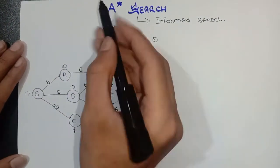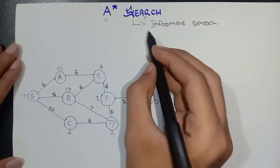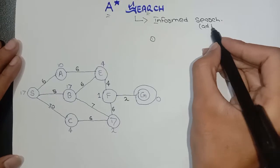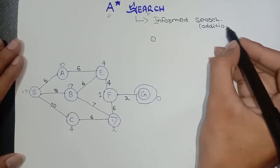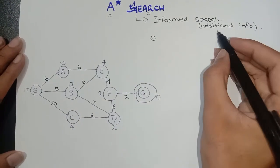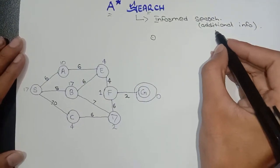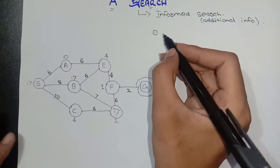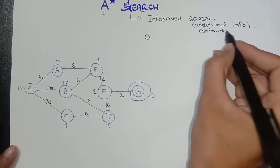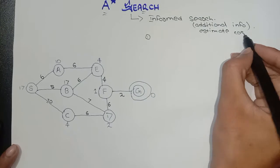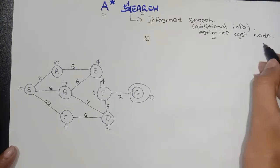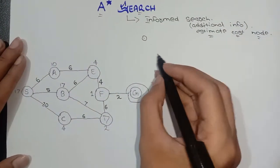Hey guys, this is Samsa and today I'm going to explain A* search technique, which is a topic of artificial intelligence. It is a subtype of informed search, in which we have some additional information, which is called estimated cost or estimated distance of a current node to the goal node.